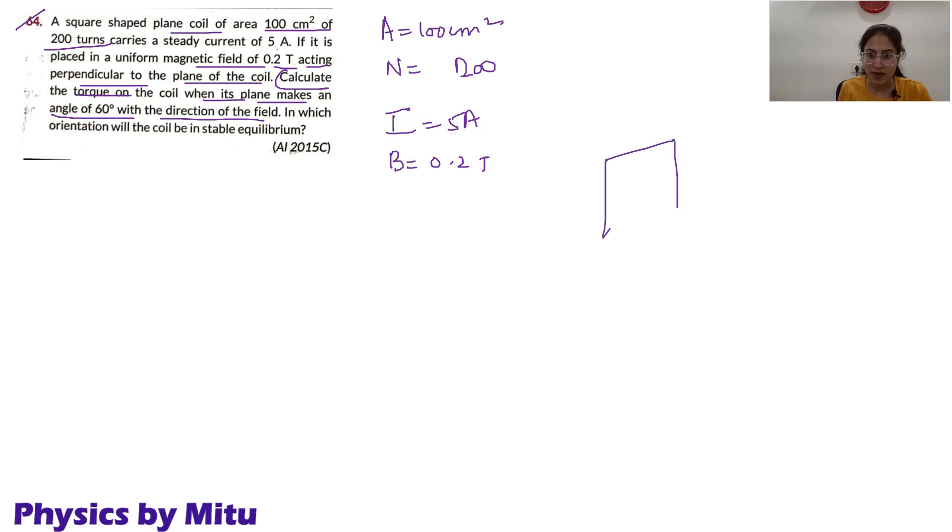Let this be the square coil. Now, let this be the magnetic field. This is making 60 degrees with the plane of the coil. We have to find torque. What is the formula for torque?